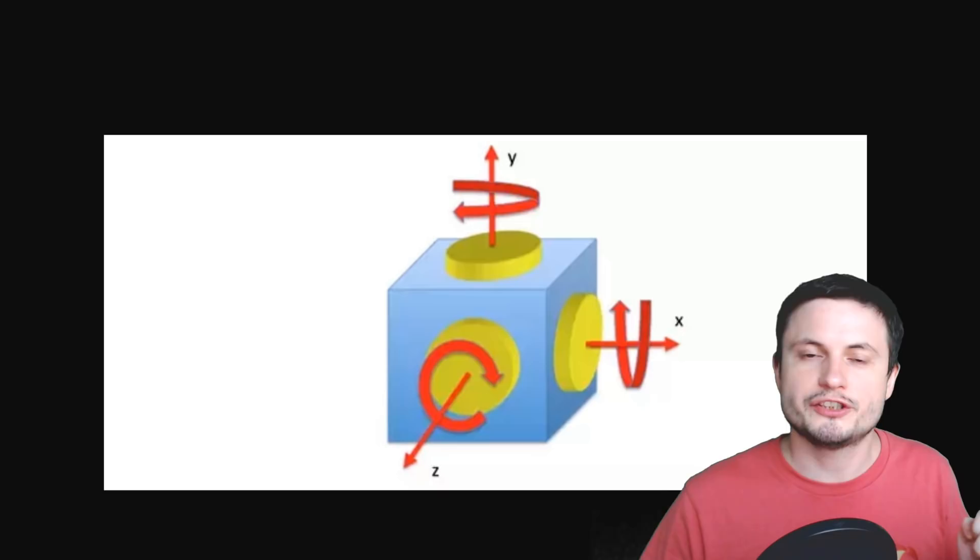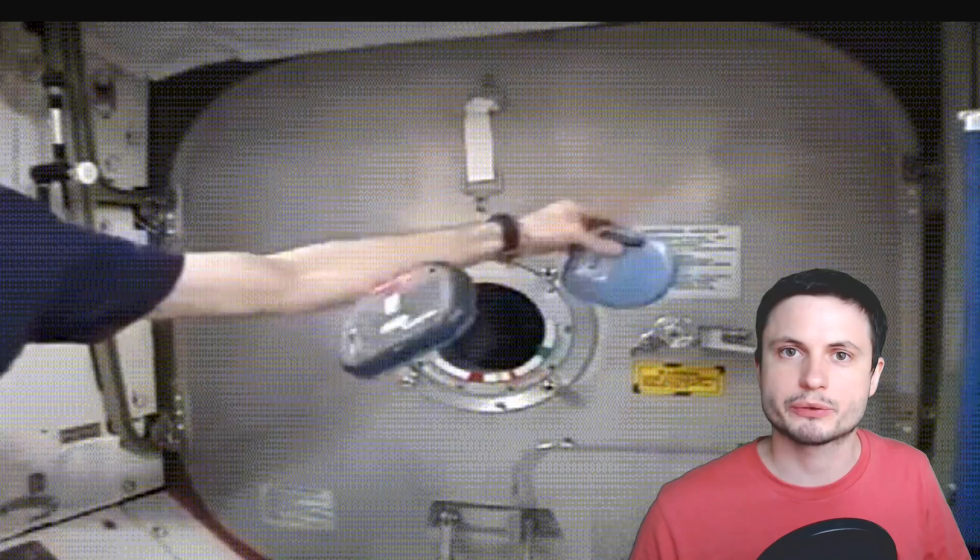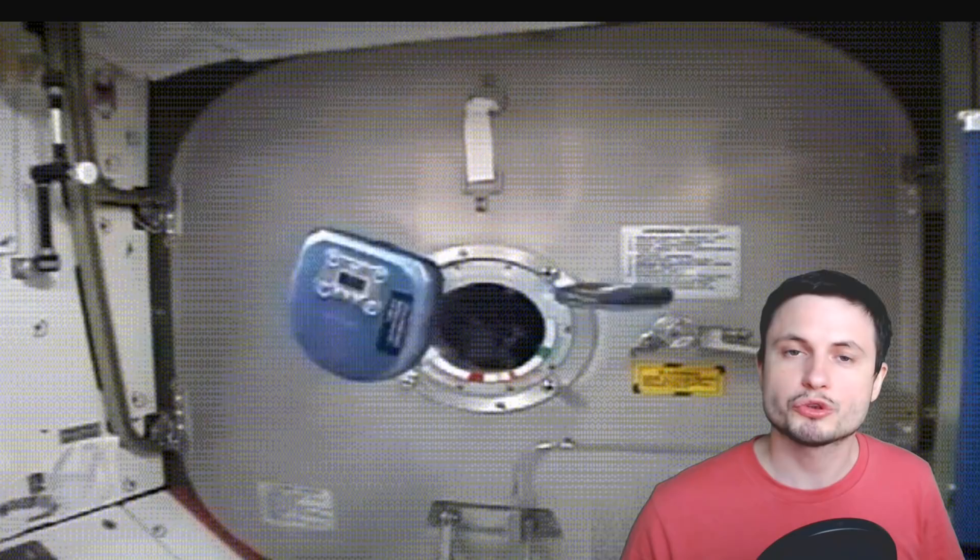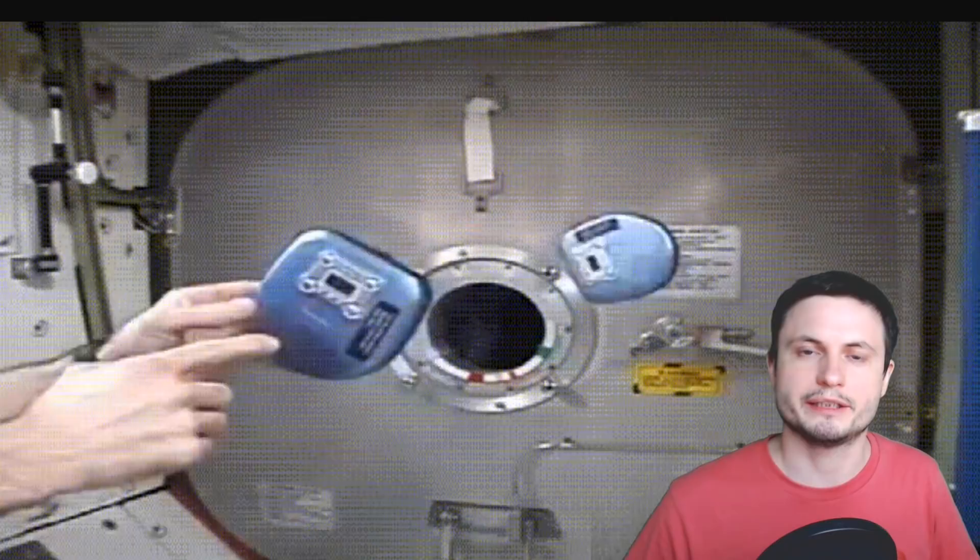So this is maybe not as easy to understand at first until you see it in action, but basically imagine if you were to take a CD player and place it in space, you could create first of all a stabilizer like you see right here on the screen. This is from the International Space Station. And at the same time you can also make objects spin around because if the CD spins one way the actual object will spin the other way. So that's kind of how the sail is able to orient itself.